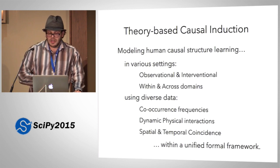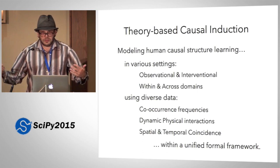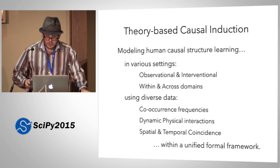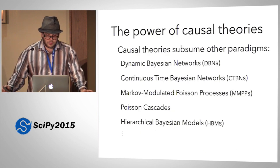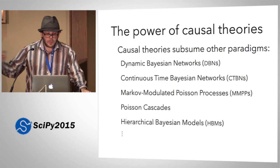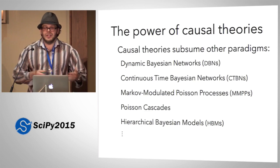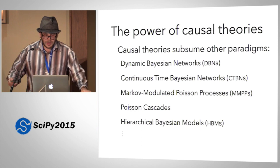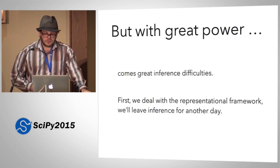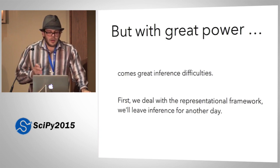In this framework, they model human causal structure learning in a variety of settings: using observational data, interventional data, within and across domains, with co-occurrence frequencies, dynamic physical interactions, spatial and temporal coincidences, among others — all with a single framework. These are incredibly powerful formal objects. If you're a machine learning researcher, you might recognize some of the terms on the slide. All you need to know is that every single one of these can be encoded in the causal theories framework. Unfortunately, with great power comes great inference difficulties, so we're going to focus on the representational framework and leave the inference problem for another day.